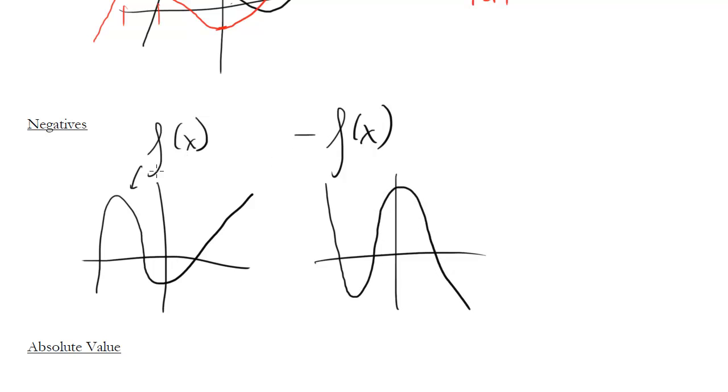So when you have a negative out front, it just flips it. So for example, if you had x squared, that looks like this. Whereas if you have negative x squared, if you remember anything about your parabolas, that makes it the frowny face. Just flips it over the axis. And that's just a little minor note about that.